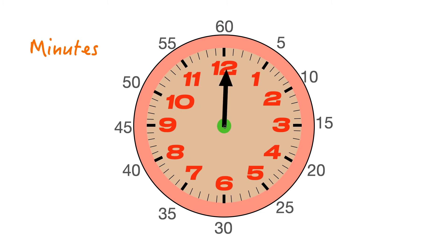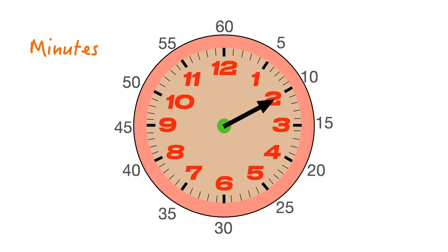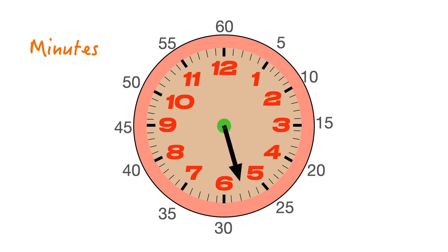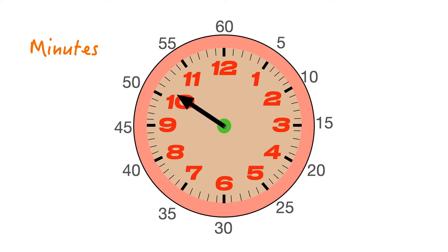Our minute hand is long. As you can see, these little dashes around the outside of the clock — they are our minutes. Because it needs to be able to point to the minutes that are ticking around the outside of our clock.